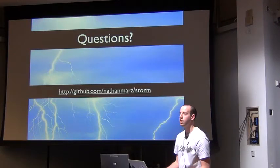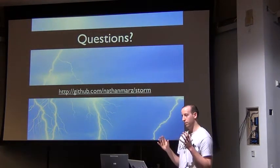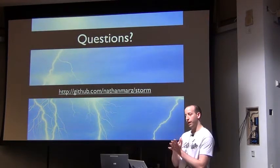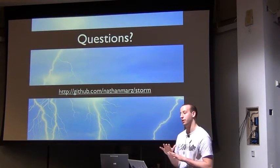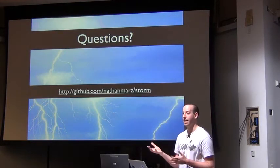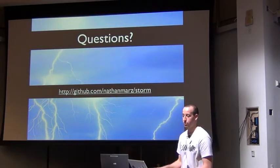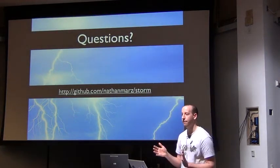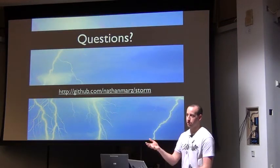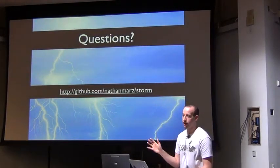Q&A — Question: isn't Nimbus a single point of failure? Answer: All Storm daemons are designed to be fail-fast and keep no state in memory — they can die and restart at any point without affecting running topologies. If Nimbus dies, it won't shut down topologies; it just restarts like nothing happened. Unlike Hadoop's job tracker where killing it loses everything, losing Nimbus is not catastrophic — you just lose monitoring and restarting temporarily.